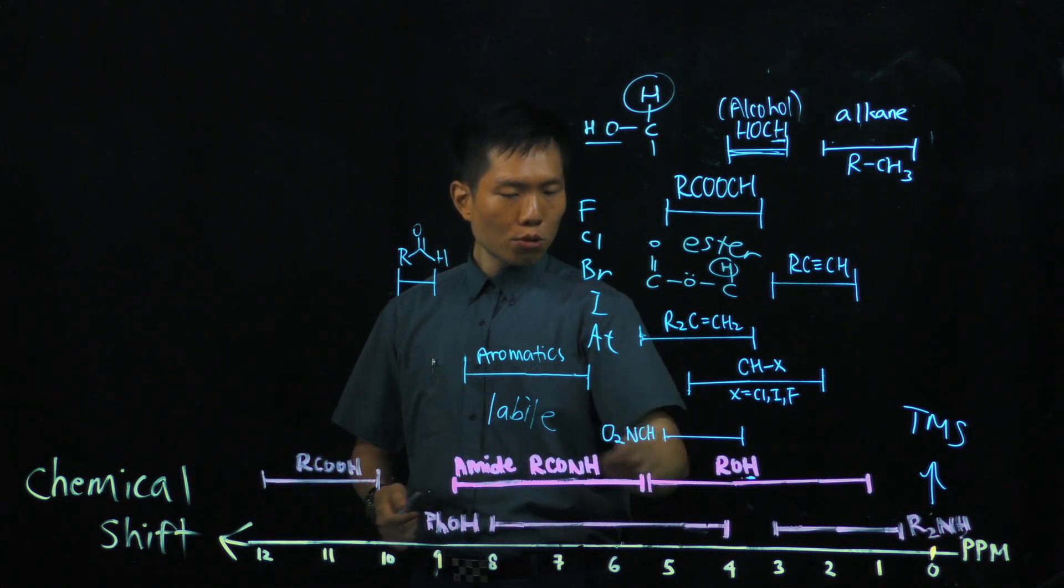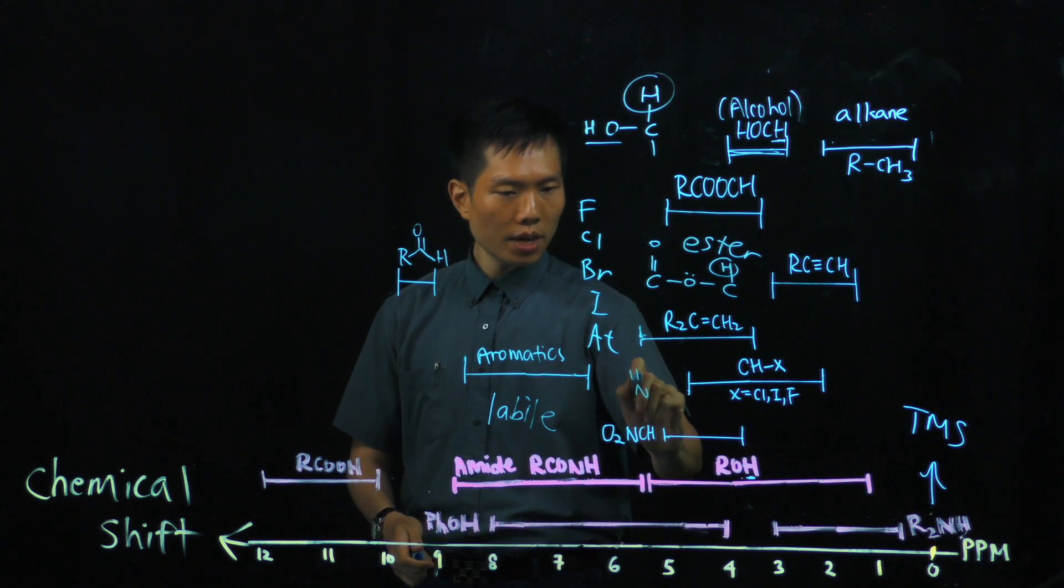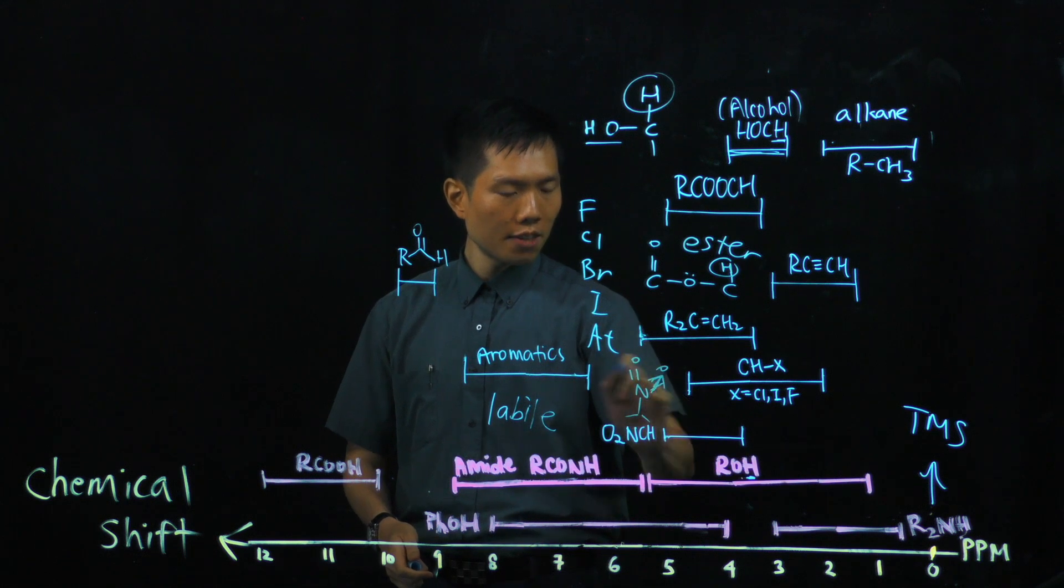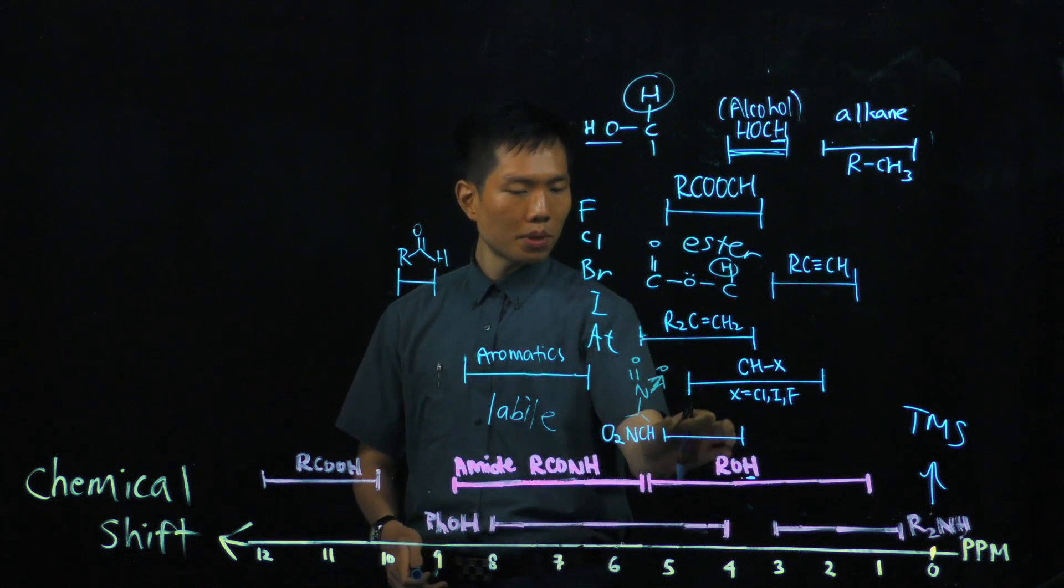And moving on, we see NO2, again, with a triple element, no, two element with three atoms here. Keep on pulling it. Pardon me, there's a dative bond here. Okay, it's a bit more deshielded.